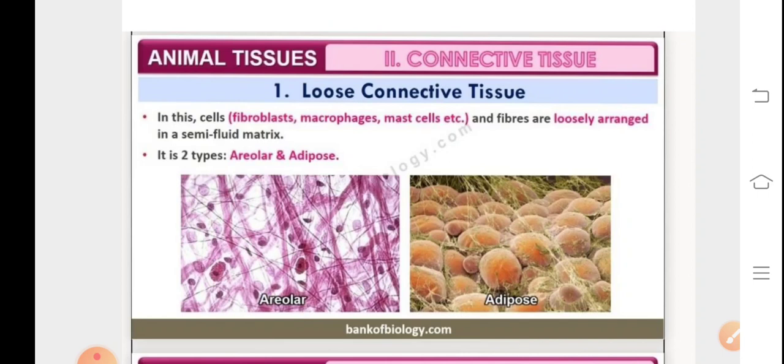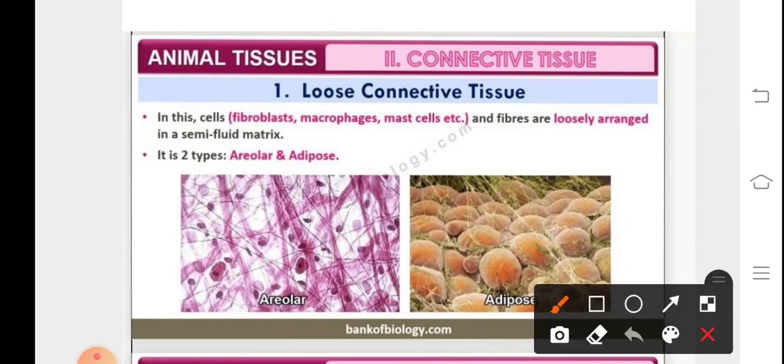In this, the cells basically, that is the fibroblast cells which produce and secrete the fibers, the macrophages and mast cells which are basically involved in phagocytosis, they are present in a semi-fluid matrix. Now, these are the underlying diagrams of the areolar tissue and the adipose tissue.